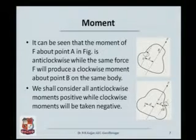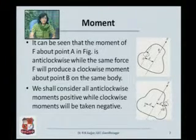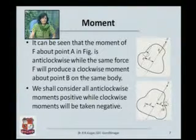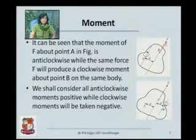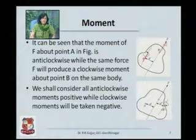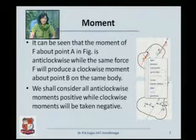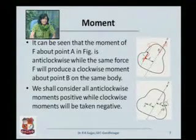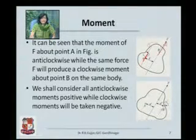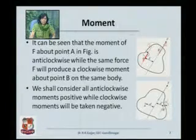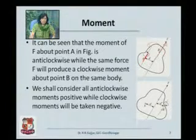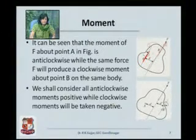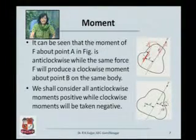Let us look at this XYZ body. There is a point A — we are interested in how this body will rotate. A force F is applied in a certain direction. Due to F, the body will rotate. There is a moment M equal to F into D, where D is the perpendicular distance of the line of action of the force from the axis of rotation. In this particular case, the force is going to rotate the body in the anti-clockwise direction.